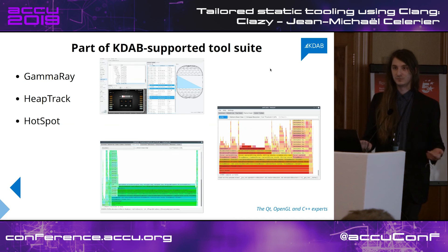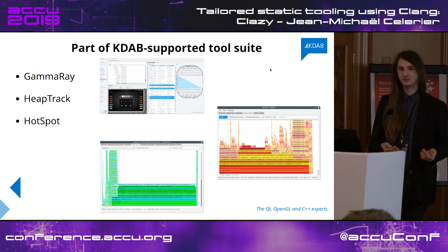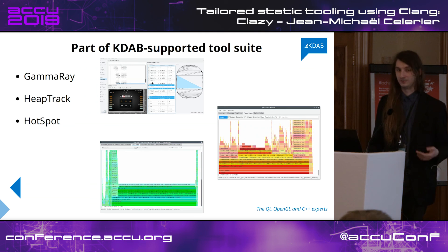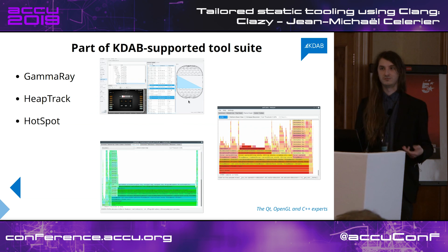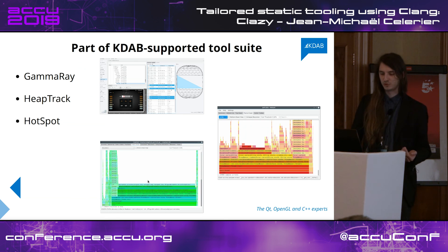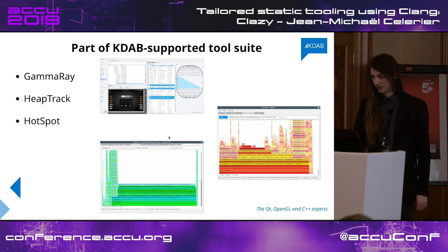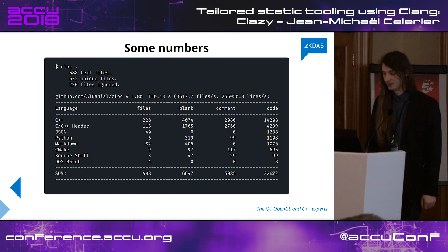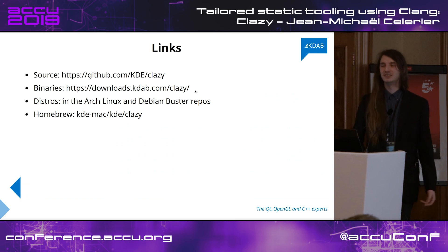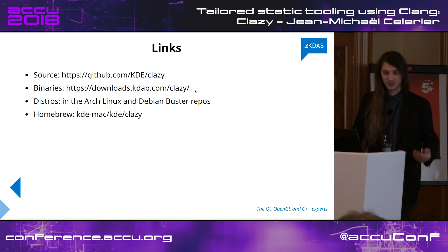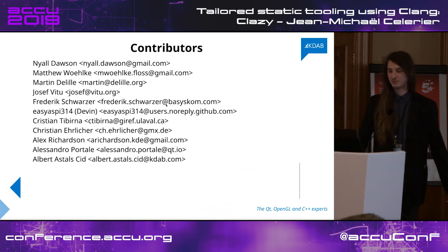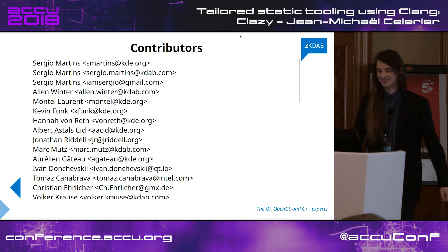That's mostly it. Clazy is part of a set of tools — KDAB puts a lot of emphasis on developer productivity. We have many useful free software tools, most GPL or LGPL, that you can use on your projects: GammaRay for Qt introspection, Hotspot which is a GUI for perf, and Heaptrack which is a memory analyzer. Clazy is another tool in this belt to make code more robust. Some numbers: 22,000 lines of code — it's a small code base. To download it, just search for Clazy on Google and it's the first result. If any of you maintain packages in a Linux distribution, please package it. Thanks to the contributors who do the actual hard work.